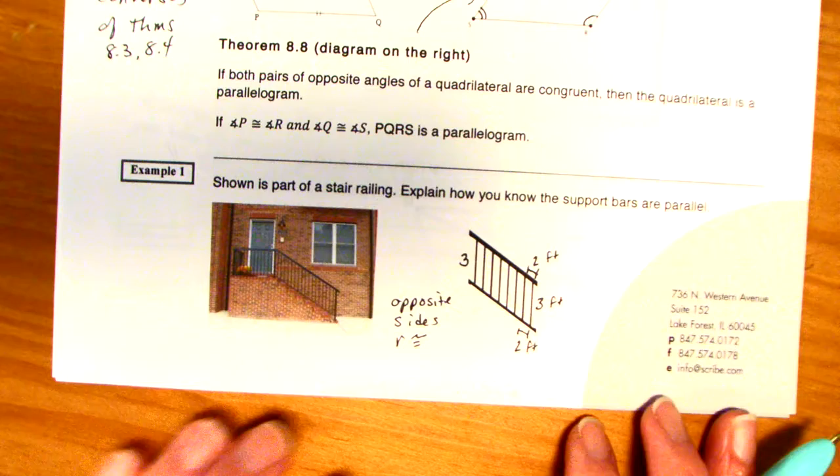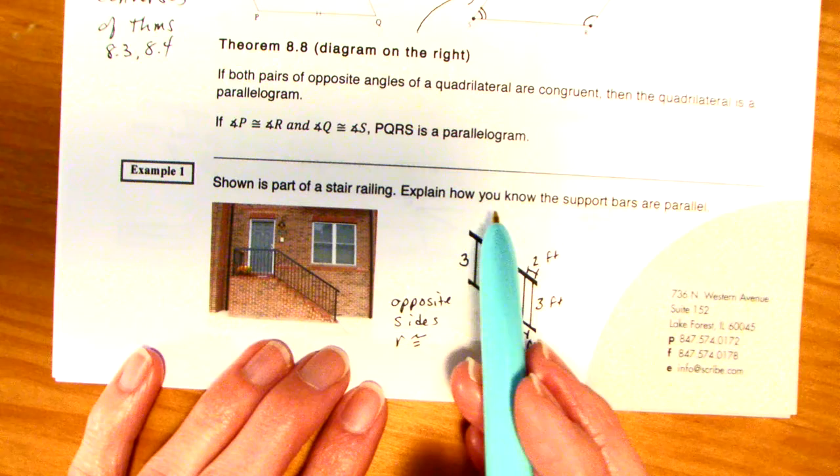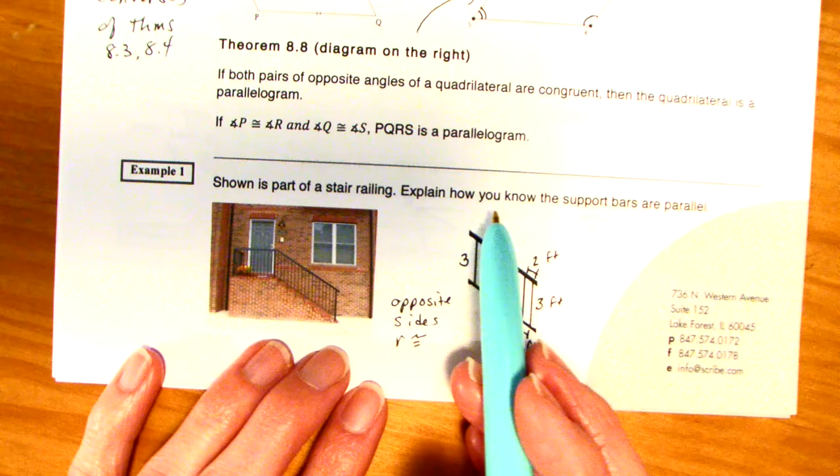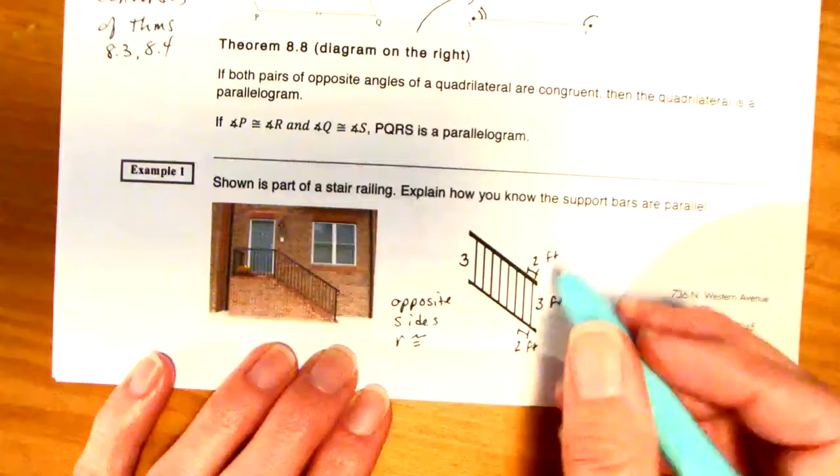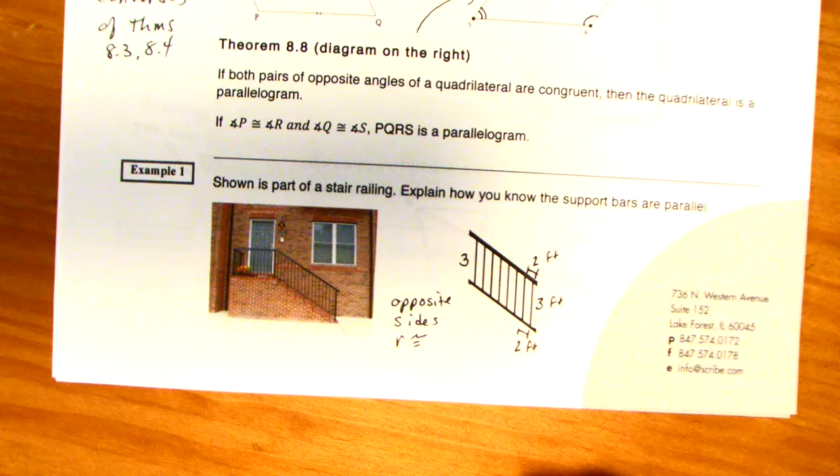Let's look at an example. Shown as a part of a stairwell, the railing. Explain how you know the support bars are parallel. Well, here, opposite sides are congruent, and right here, opposite sides are congruent. So opposite sides are congruent, so we know that those bars must be parallel. So I guess I can put in that little arrow if you want.